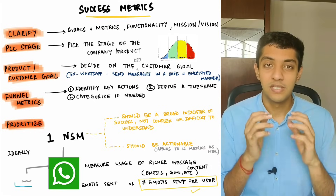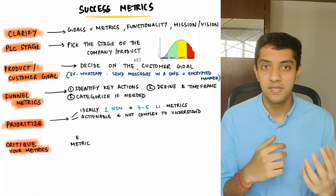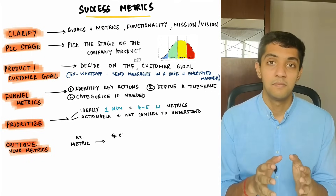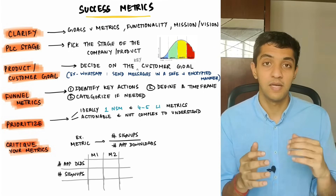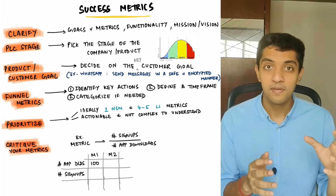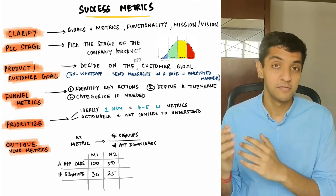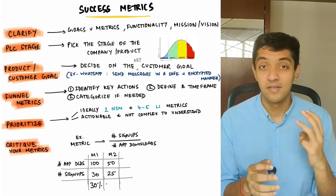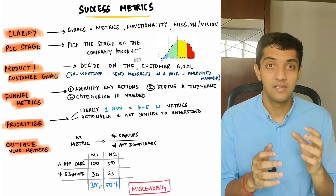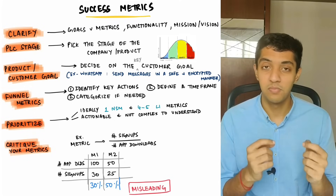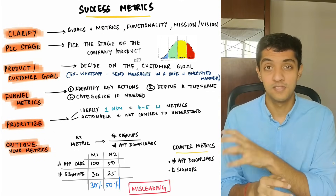The last step is to critique your own metrics and add counter metrics if needed. Look at each prioritized metric and think of ways it could mislead you or any loopholes it might have. For example, if you track signups divided by downloads, in month one you might have 100 downloads and 30 signups (30%), and in month two 50 downloads and 25 signups (50%). The ratio alone suggests you're on the right track, but in reality total signups dropped. A good counter metric here would be total number of downloads and total number of signups in a given time period.